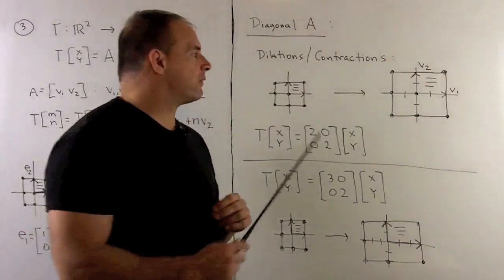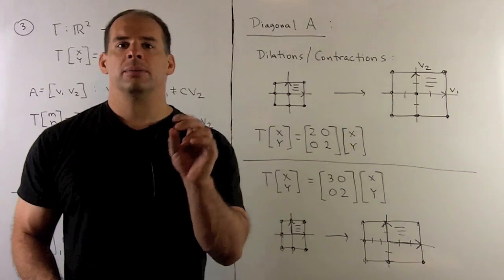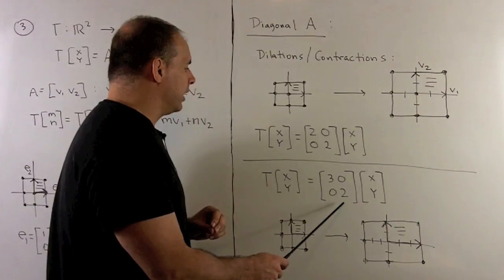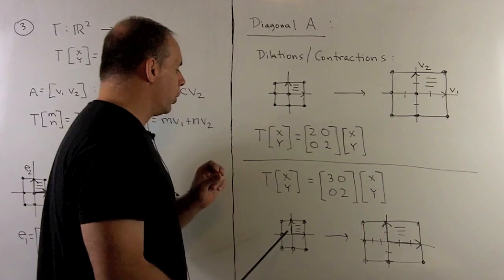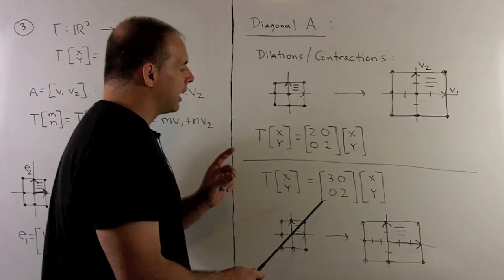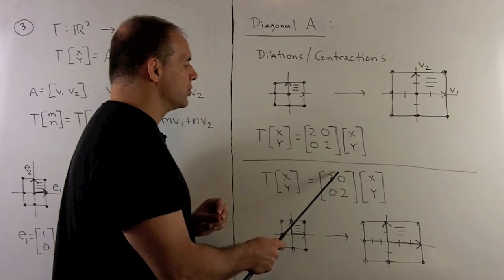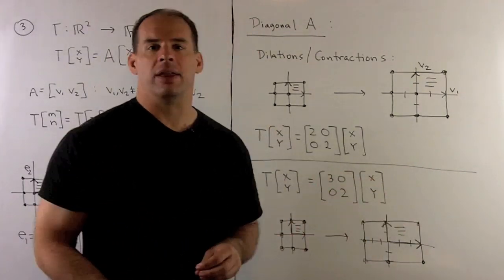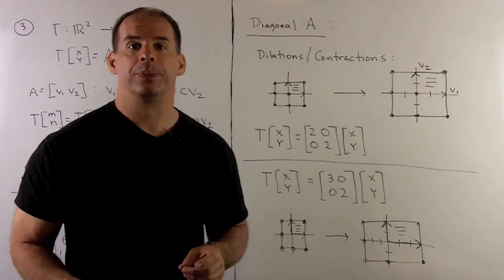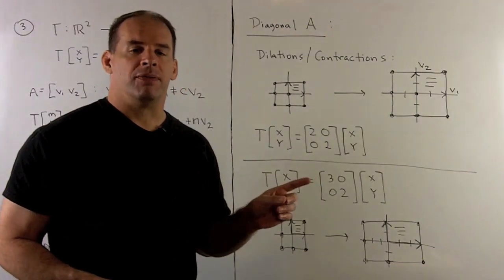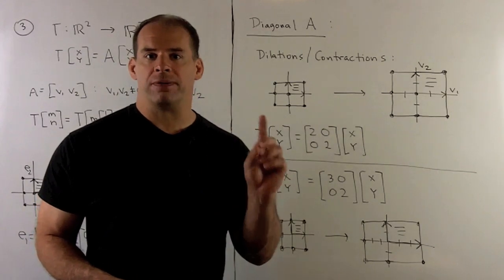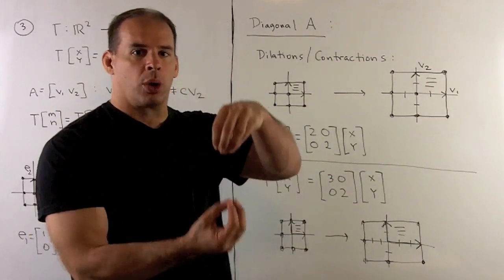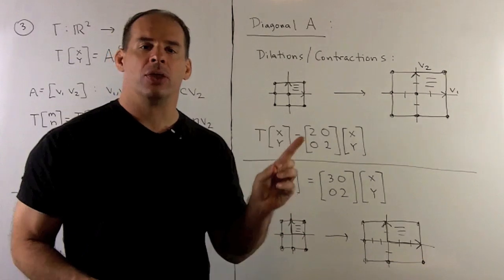Moving to diagonal matrices with positive but unequal entries, consider [3,0,0,2]. E1 goes to (3,0) and E2 goes to (0,2), so along the x-direction we stretch by a factor of 3, and in the y-direction by a factor of 2. Here, only two lines through the origin are fixed: the x-axis, stretched by 3, and the y-axis, stretched by 2. Any other line through the origin gets mapped to a different line.